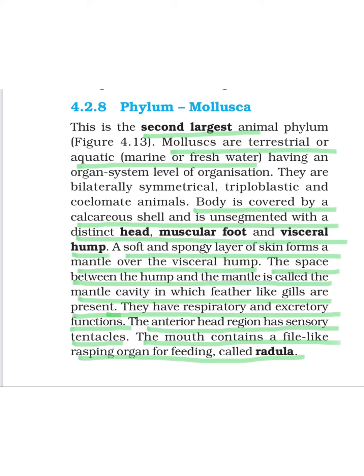The space between the hump and the mantle is called the mantle cavity, in which feather-like gills are present. Gills are mainly for respiration — for exchange of gas — but an excretory function is also performed by gills. The anterior head region has sensory tentacles, considered part of the nervous system. The mouth contains a file-like rasping organ for feeding called the radula, comparable to teeth of higher animals. Mollusks are usually dioecious, oviparous, and show indirect development with larval stages.